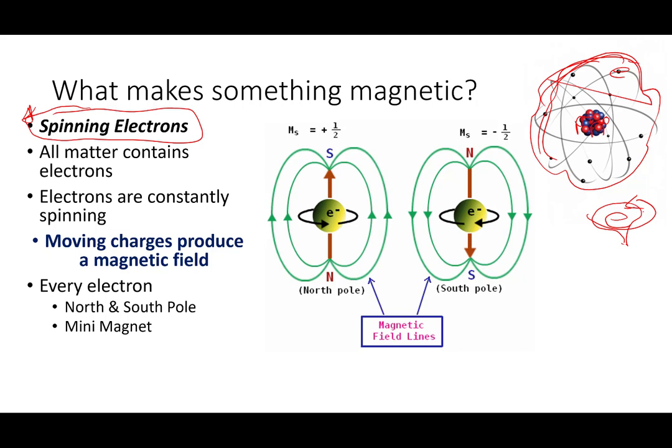Because all matter contains electrons and all electrons are constantly spinning, all matter has slight magnetic properties. What this means also is every single electron in the food you eat, what makes up your bodies, the air you breathe, is a tiny mini magnet with a north and south pole.